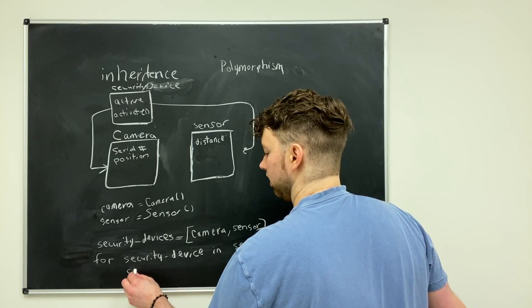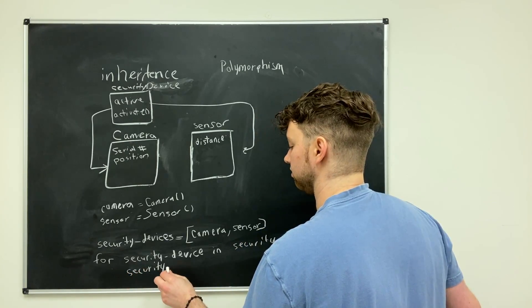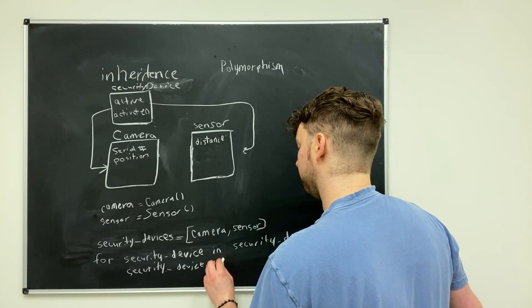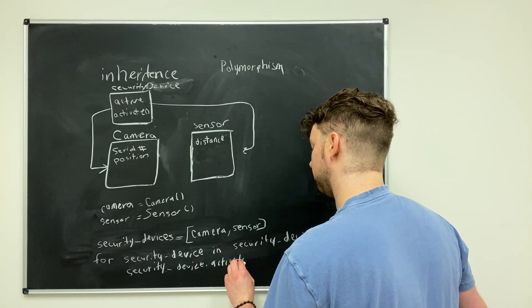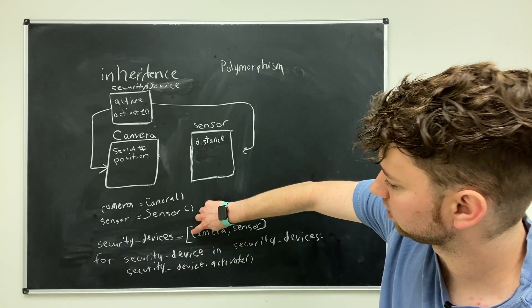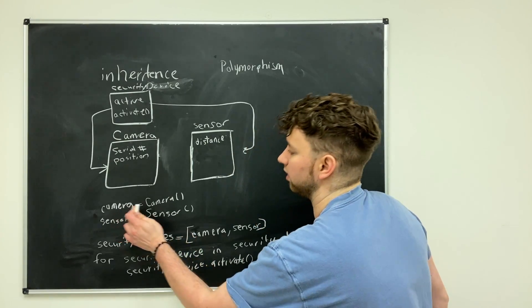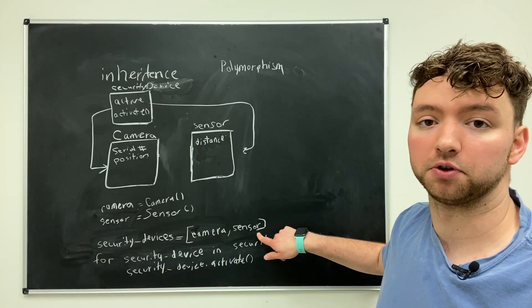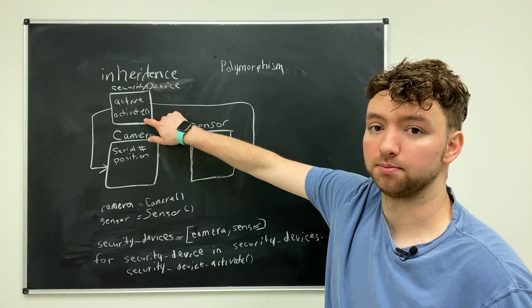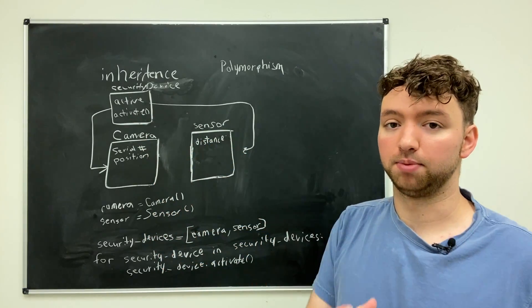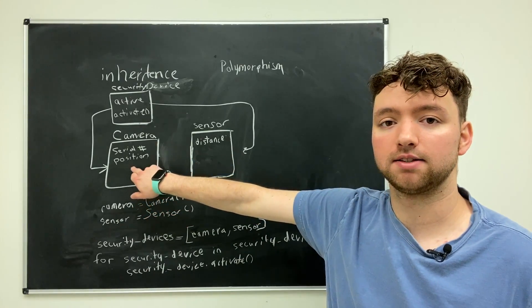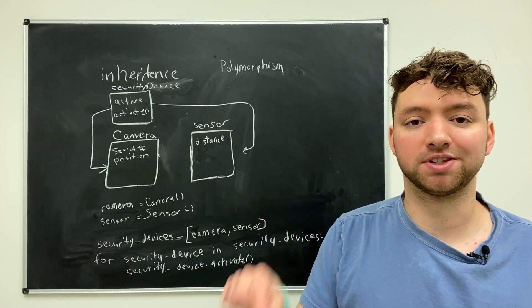And then what we could do is we could invoke a shared method inside of this loop. So we could say security device dot activate. So the first iteration security device is going to refer to this camera object. Looks like a capital C, but it's a lowercase c there referring to this object here. Then the second iteration is going to refer to the sensor object. Since they both are going to have an activate method, since it's defined in the base class, this code will work.